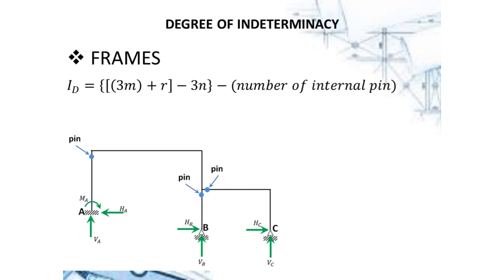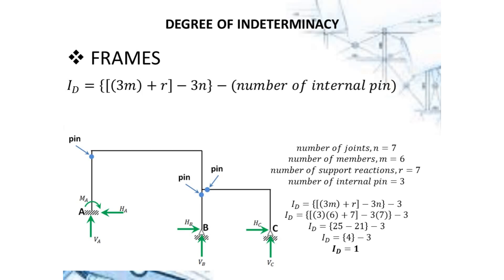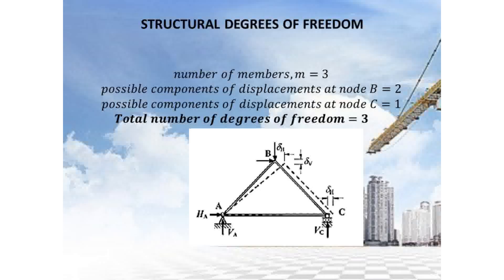Looking at this example, there are three internal pins. The number of joints is seven, there are six members, and there are seven reactions. Since there are internal pins, you subtract that from the equation. Substituting these values, the ID is now equal to 1.